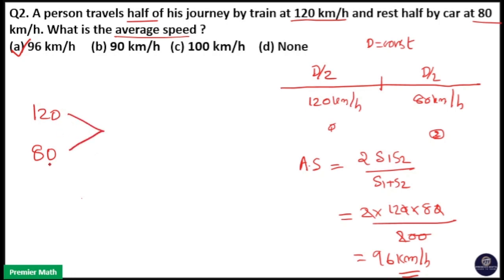You can take the LCM of 120 and 80 because distance is constant here. So LCM of 120 and 80 is double of 120, which is 240, and 240 is divisible by 80. Here 80 goes 3 times in 240 and 120 goes 2 times in 240.